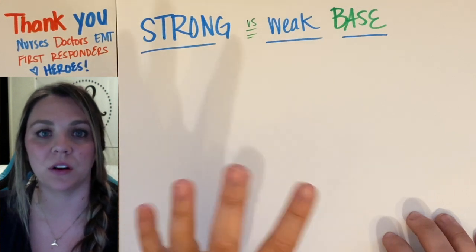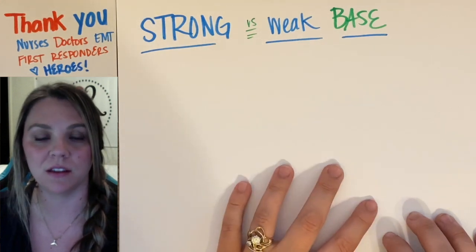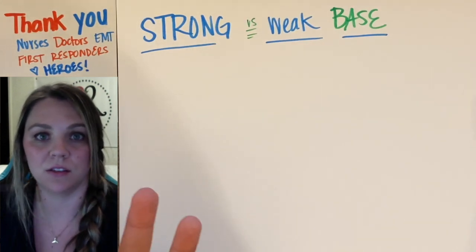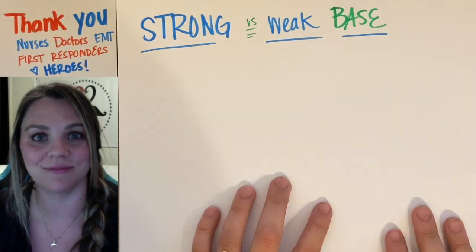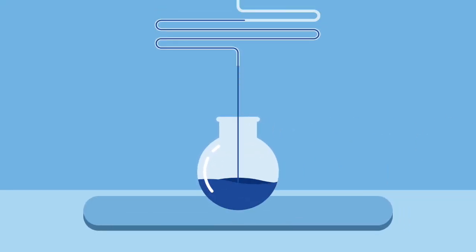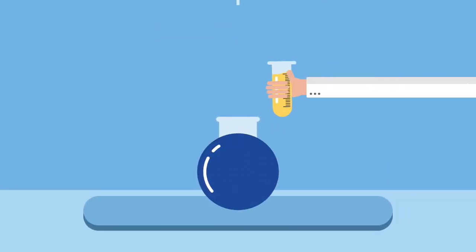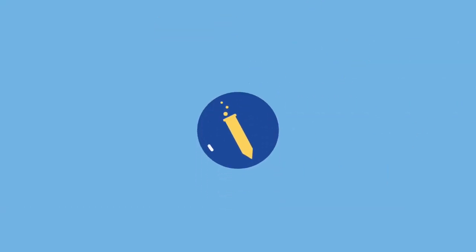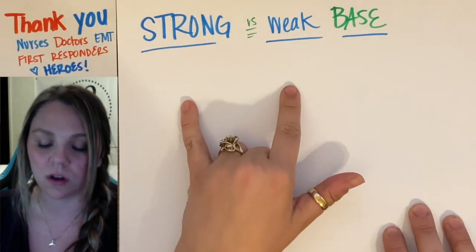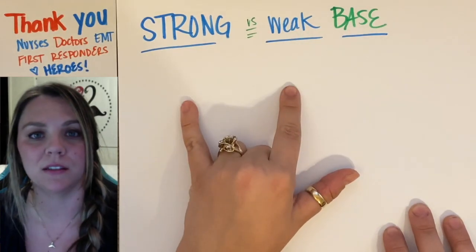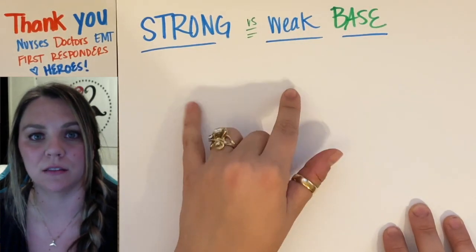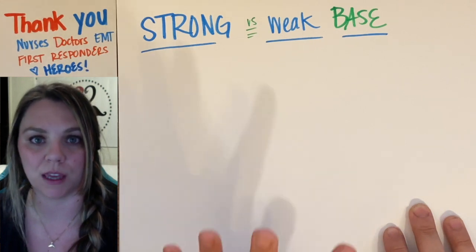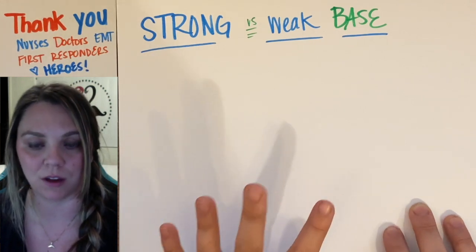We're going to look at strong and weak bases and how they dissociate in a solution. Strong and weak bases act literally the exact same way as strong and weak acids.